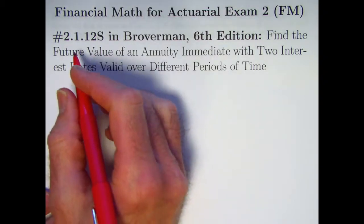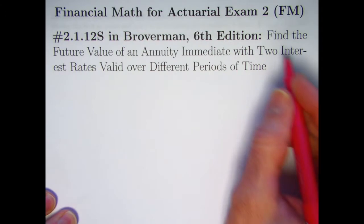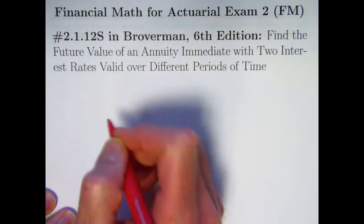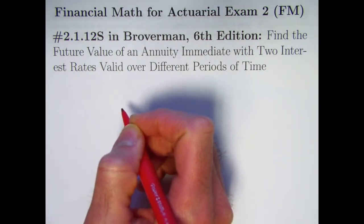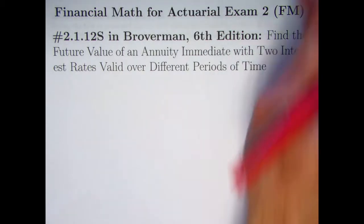In this video, we'll be solving problem 2.1.12S: Find the future value of an annuity immediate with two interest rates valid over two different periods of time.